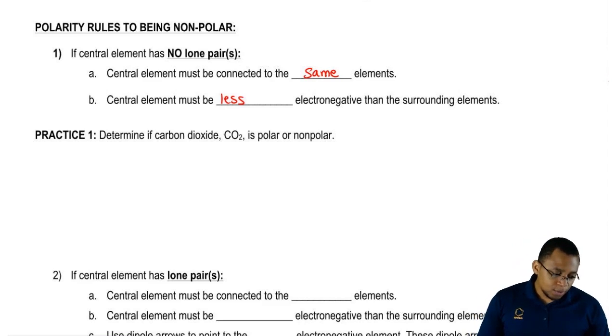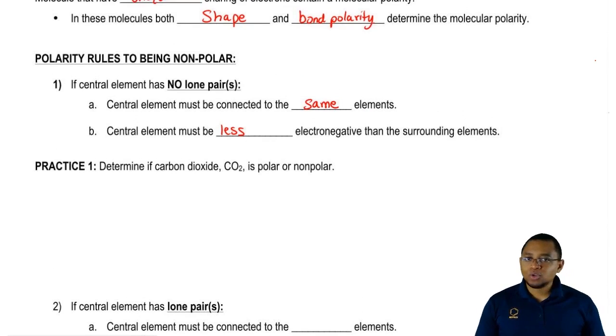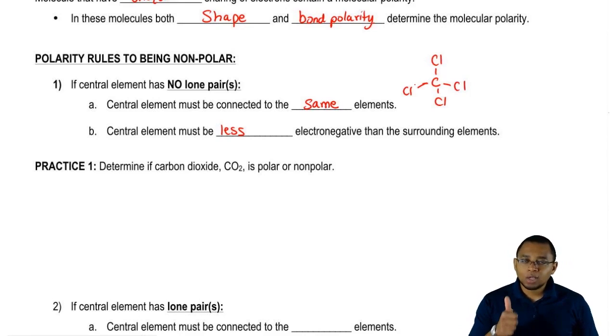Let me give you a quick example before I let you guys do this as practice. We could have CCl4. The central element has the same elements all around, so it follows rule 1A. Then the central element carbon is less electronegative than the chlorines around it. Therefore, this follows both rules, so it's nonpolar.